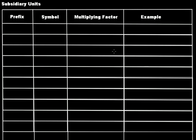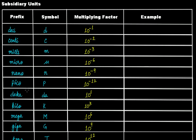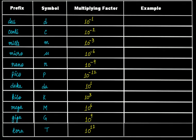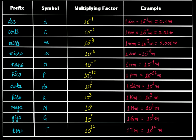I'm sure you must have seen these prefixes: deci, centi, milli, micro, nano, pico, deca, kilo, mega, giga, tera. Their symbols are here — lowercase d, lowercase c, lowercase m, mu, lowercase n, lowercase p, da, lowercase k, uppercase M, G, and T. And these are their multiplying factors. These are some of the prefixes.